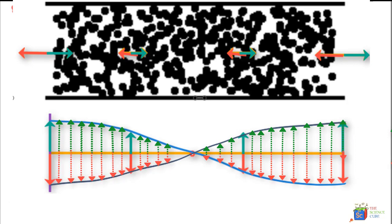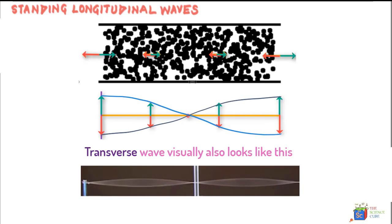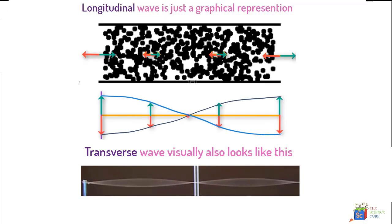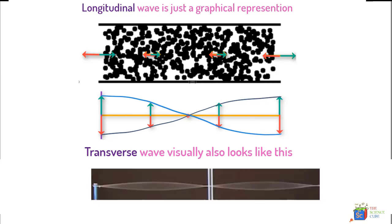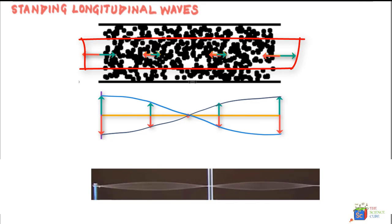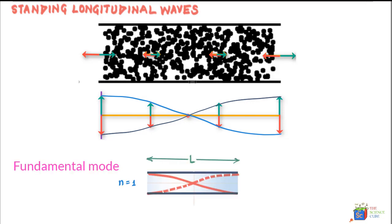So what is important here to remember is that while in transverse waves, the standing waves actually look like this visually too, the standing waves represented here for longitudinal waves is only a graphical representation since the particles of the medium are not moving up and down, they are moving parallel to the x-axis. So when waves form this way in a pipe, it produces a sound that is called the fundamental mode or the first harmonic.